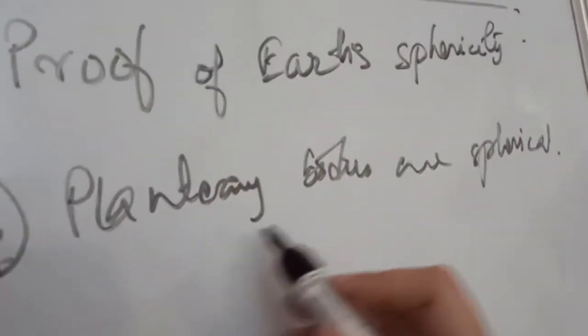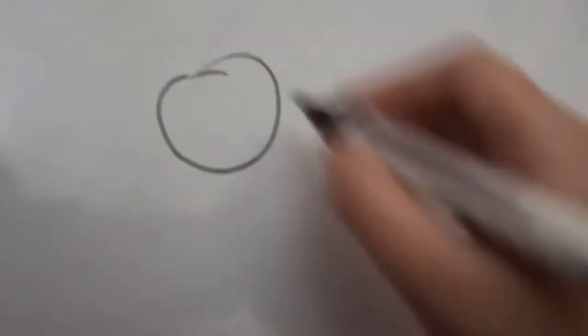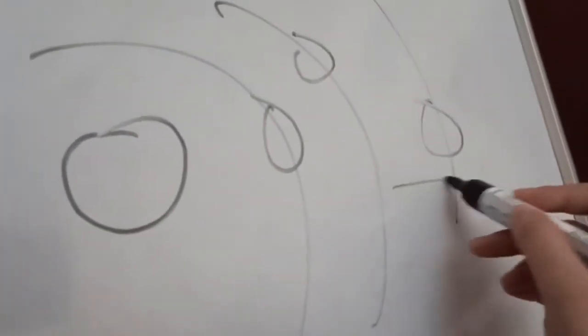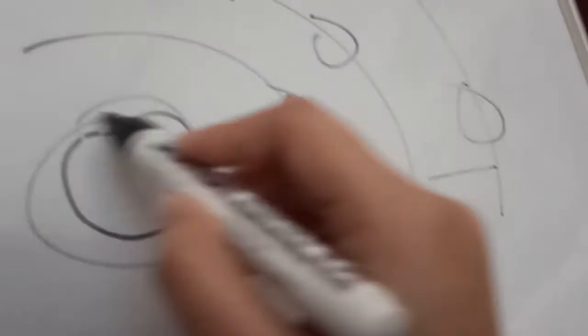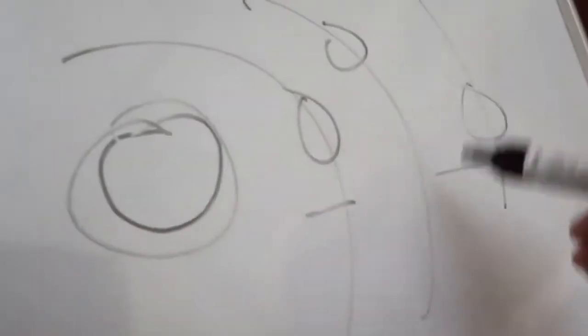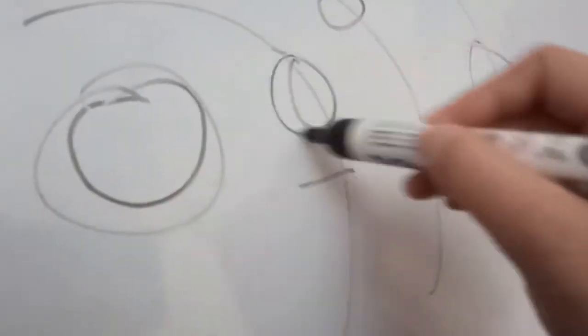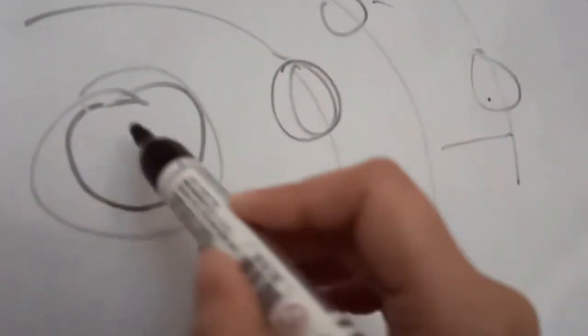The next point is that planetary bodies are spherical. When we see into space, we see that the sun is round in shape, and all the planets are round or spherical in shape. So Earth, being a part of the same solar system, can't be something different. This also gives proof that like all other planets and the sun, the Earth is also spherical in shape.